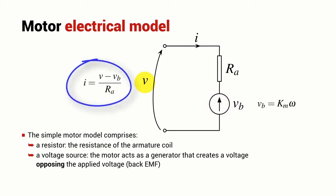The current that flows into the motor is given by the difference between the applied voltage V and the back EMF voltage VB divided by the armature resistance RA. The torque generated by the motor is proportional to the current that flows through the motor and the proportionality constant is KM.